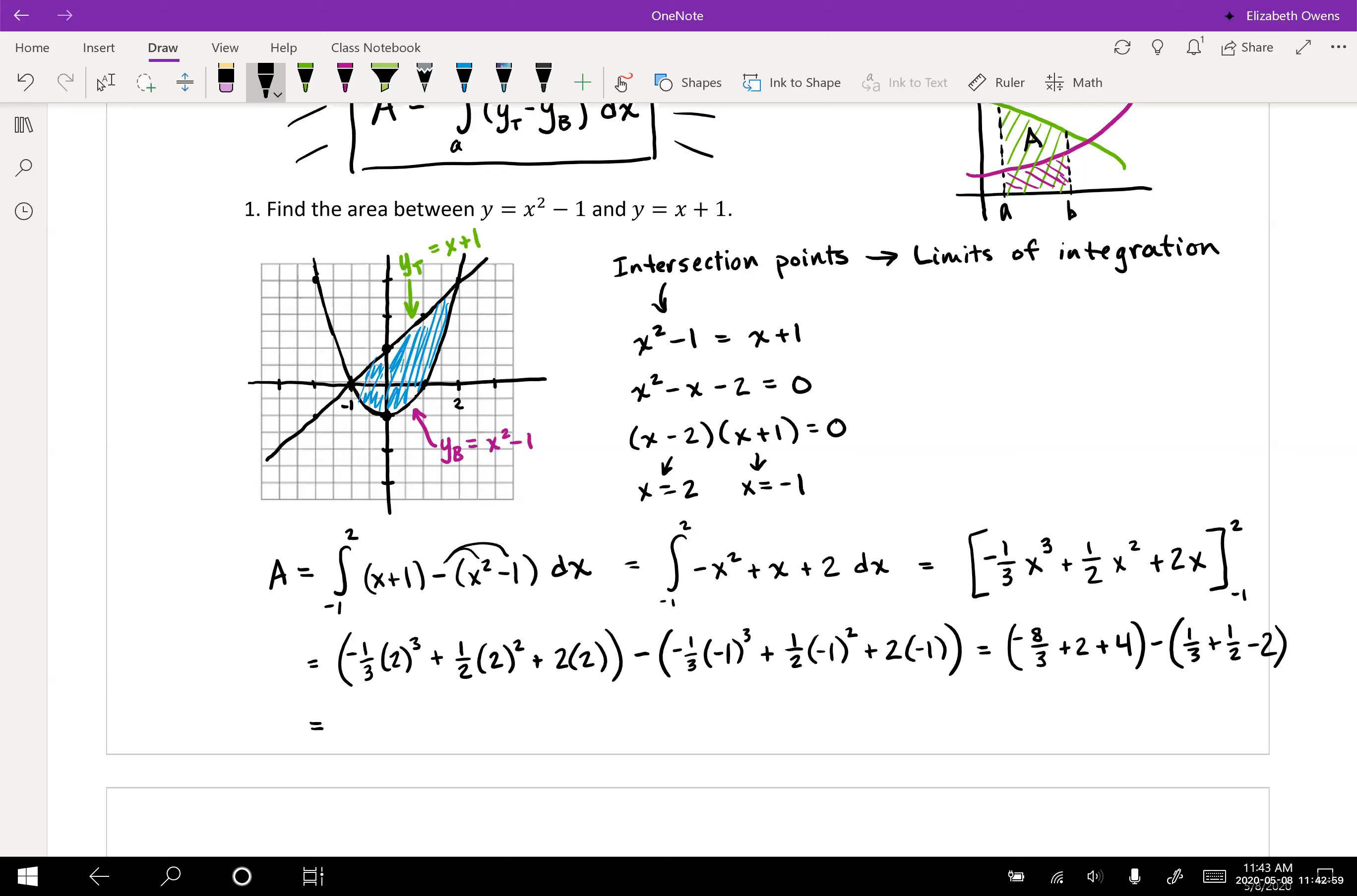I'm finishing out the arithmetic here: negative eight thirds plus six. I'm going to go ahead and distribute this negative here. Then I can combine my negative eight thirds minus one third, that's negative nine thirds, and then we have plus six plus two, that'd be plus eight, and then minus a half.